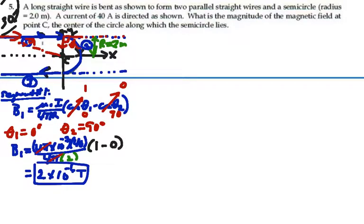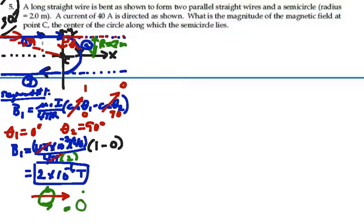By the right-hand rule, with this current going to the right and pointing my thumb in that direction and curling my fingers around, the field at point C is going into the page. So B1 is into the page.